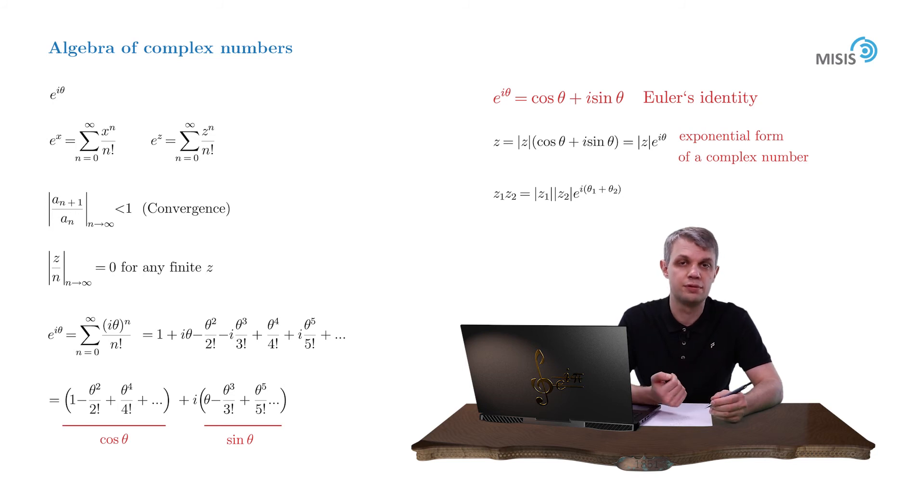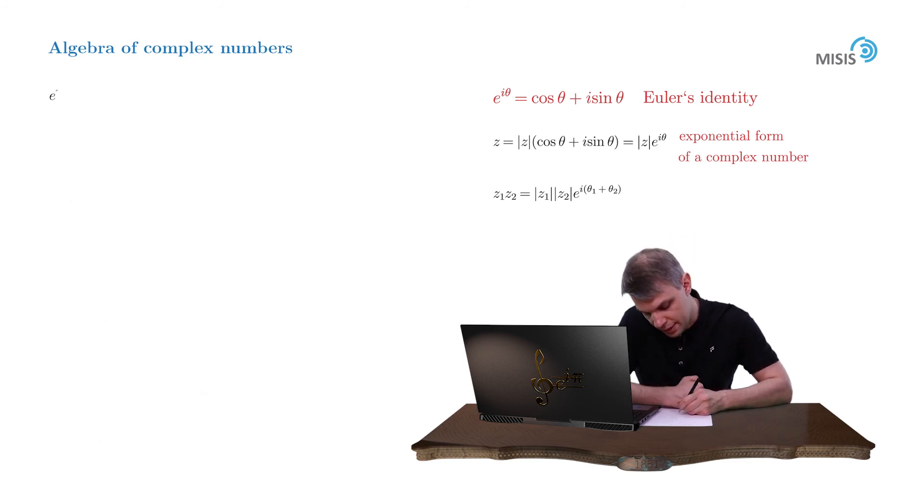Even more, if we recall that cosine and sine function are 2 pi periodic, we immediately obtain that our complex exponential is also 2 pi periodic. Indeed, e to i theta plus 2 pi i n is equal to cosine of theta plus 2 pi n plus i sine theta plus 2 pi n, which is simply e to i theta.